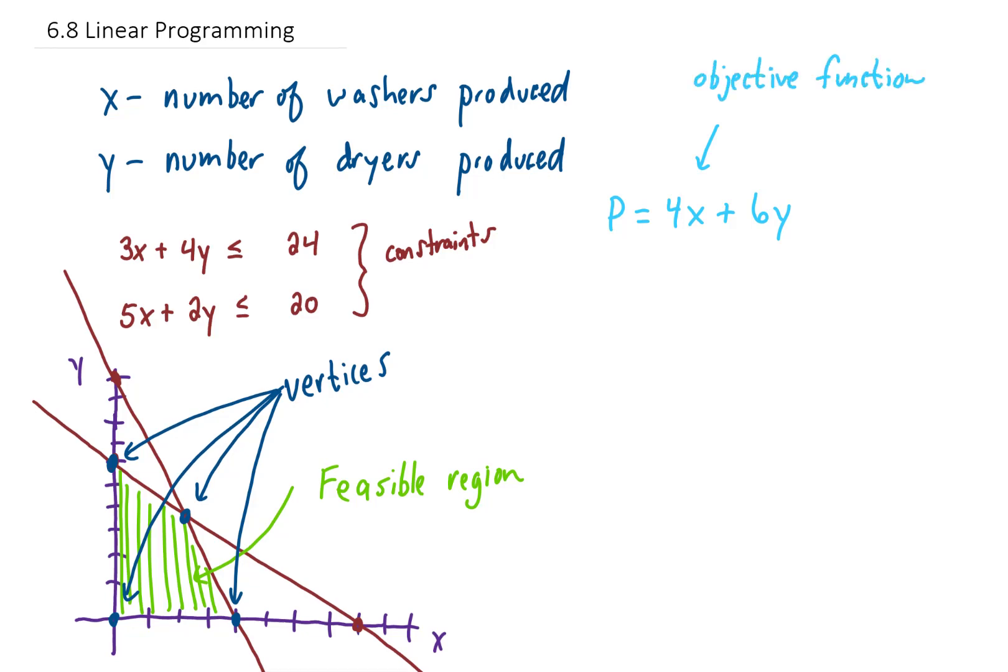Well, the fundamental principle of linear programming says that if we have an objective function like this, the maximum or minimum values of this objective function will occur at these vertices of the feasible region.